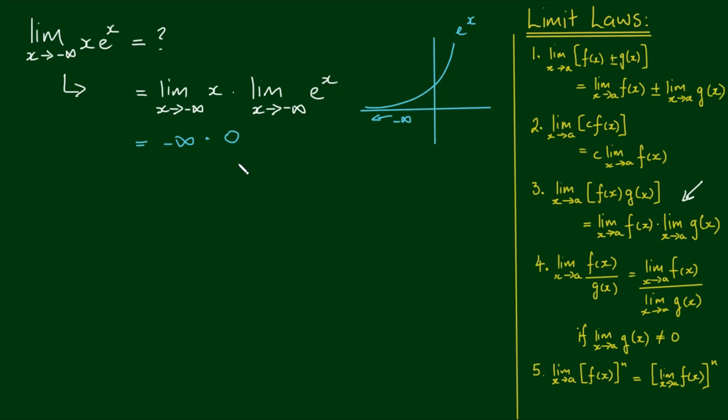So we have a result that doesn't really make sense here because we have negative infinity by 0. So it can either be negative infinity or it can be 0, but we can't be sure what it's going to be. So what we're going to have to do is transform this limit into one where we can get a more sensible answer.